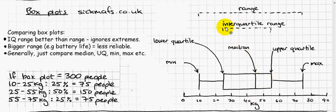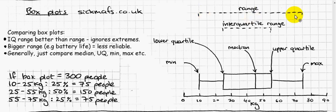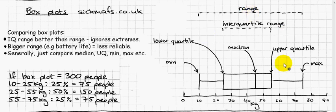The interquartile range means the difference between the upper quartile and the lower quartile — upper quartile take away lower quartile. And range means maximum take away minimum. So that's the basic stuff about box plots.